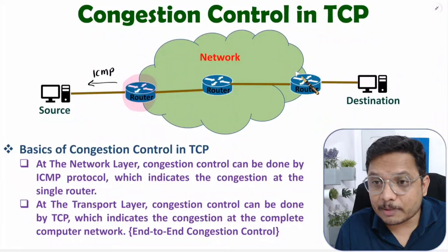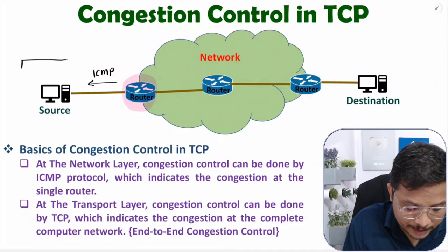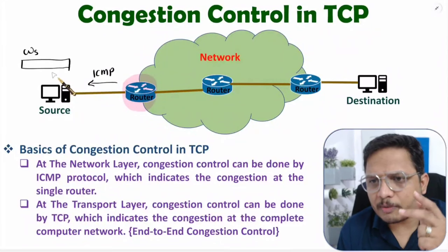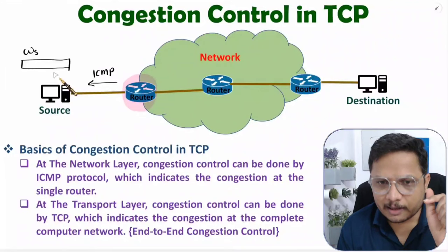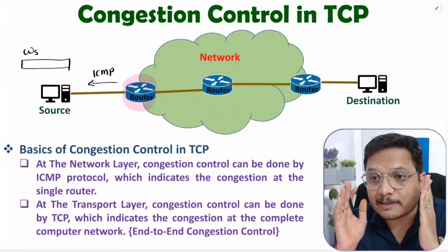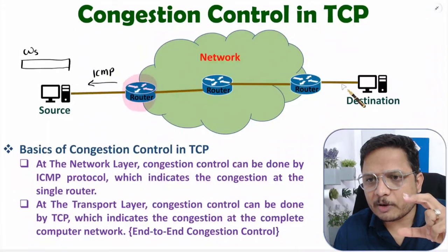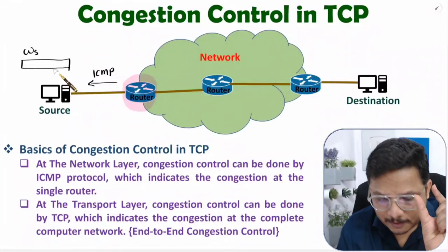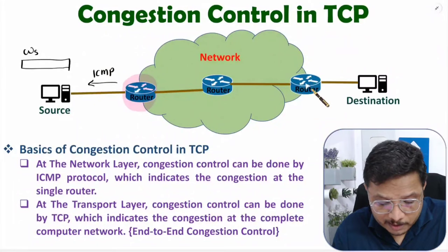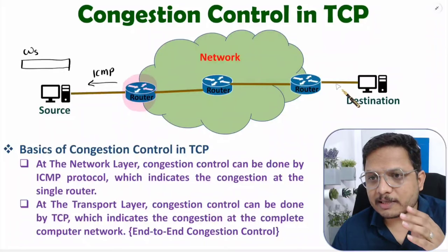To control congestion across the complete network, at the source side we will be scaling the window size. The window size determines how much data the source can transmit — a larger window means more data transmission, a smaller window means less. So by controlling the size of this window we scale the data transmission and thereby control congestion.